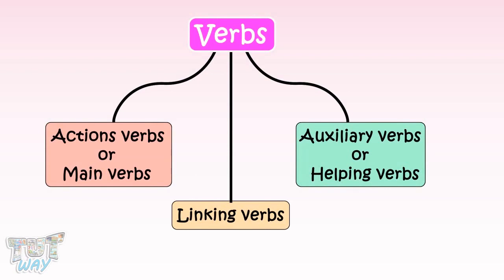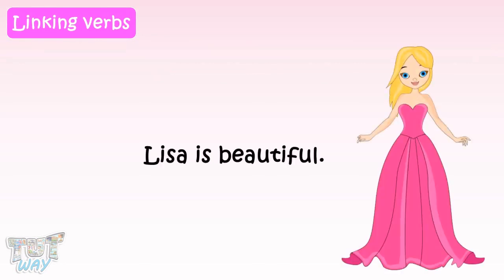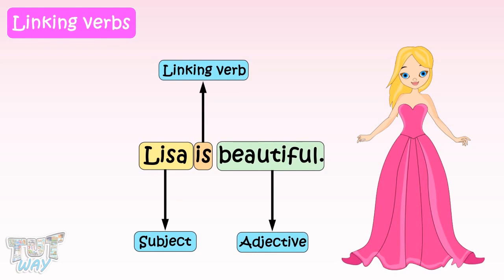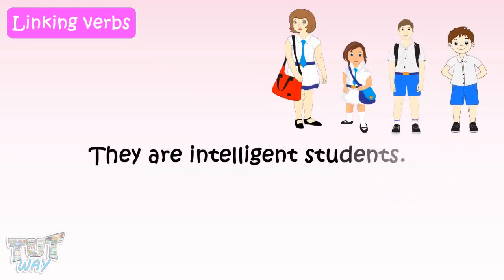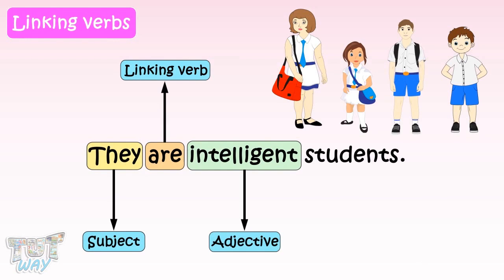The second category of verbs is linking verbs. These verbs tell nothing about the subject; instead, they link the subject to a noun or an adjective. Consider the sentence: 'Lisa is beautiful.' The subject Lisa is linked by the verb 'is' to the adjective 'beautiful,' so 'is' is a linking verb. Another example: 'They are intelligent students.' The linking verb 'are' links the subject 'they' to the adjective 'intelligent,' so 'are' is a linking verb.